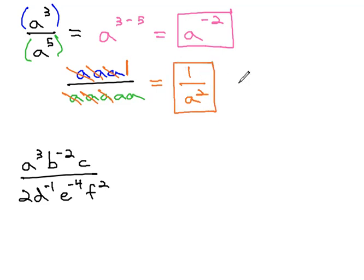Simplifying using this other way, we end up with the fraction 1 over a squared. Because both of the ways we simplified are acceptable methods of simplifying algebraically, both of these must be equivalent. a to the negative 2 is the same as 1 over a squared.